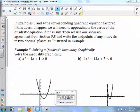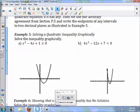Example 3 for the corresponding quadratic equation factor. If this doesn't happen, we will need to approximate the zeros of the quadratic equation if it has any. Then we'll use our accuracy agreement from section P5 and write the endpoints of any intervals to two decimal places as illustrated in this next example.